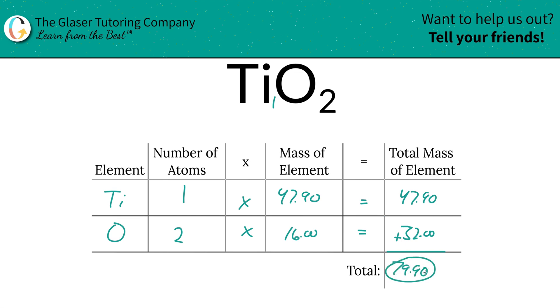Oh wait, that's bromine's mass. Cool. The units are in terms of AMU — atomic mass units — and that's because we're finding molecular mass. Those are the units.